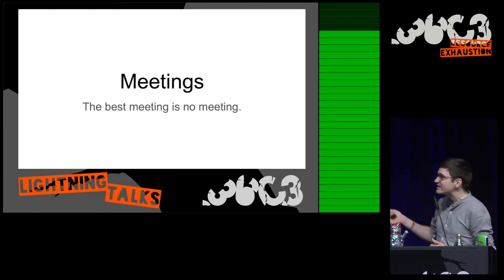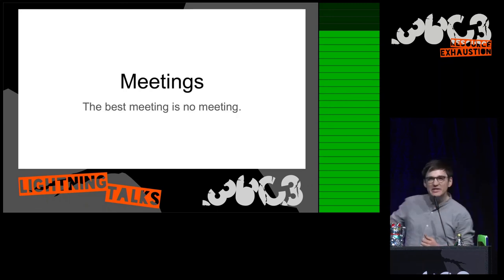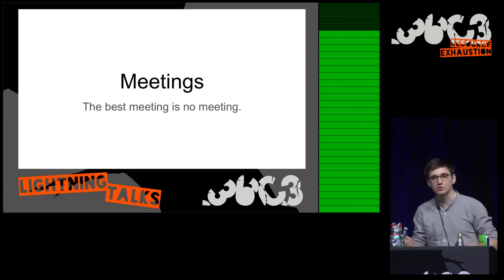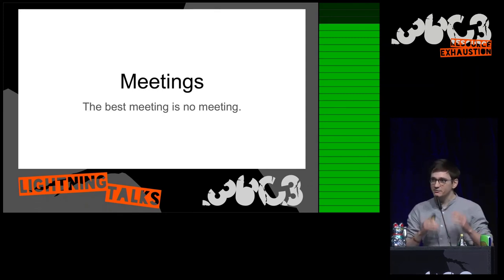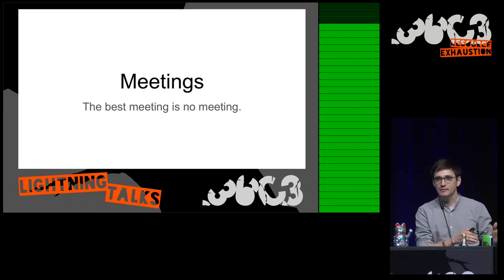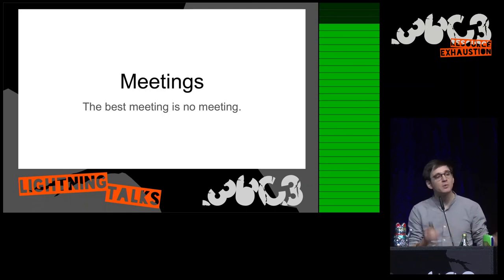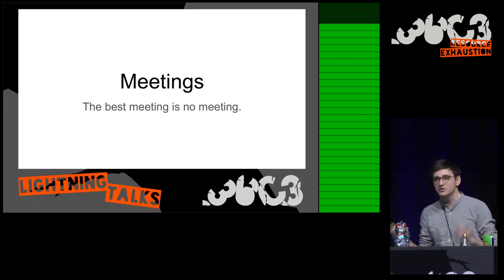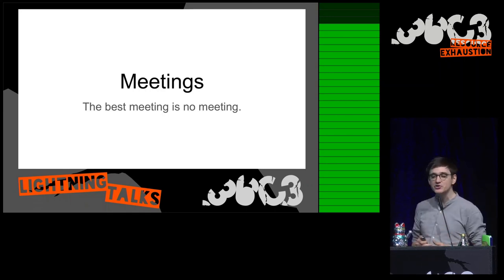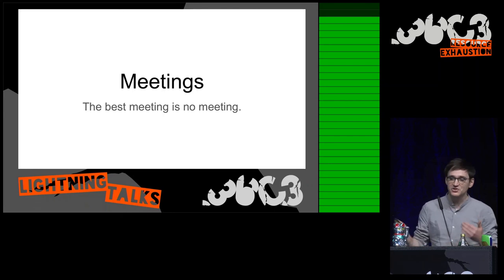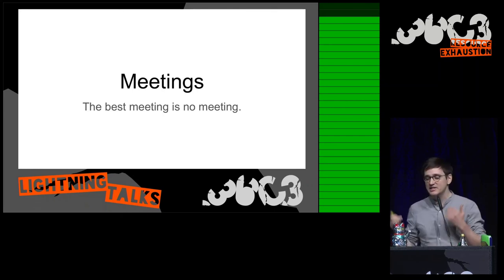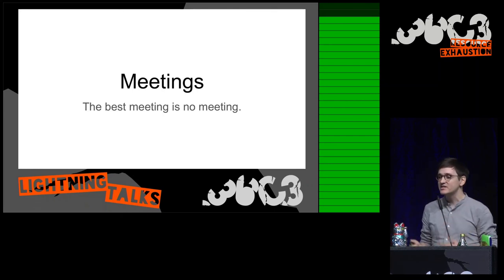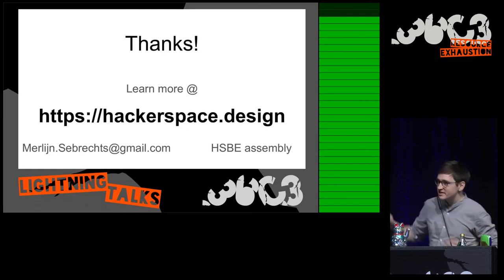The third thing is meetings. Meetings are also a big issue in a doocracy, because meetings give power to the people with opinions, and we do not want that. We want to give power to the people who actually do stuff. So the best meeting is no meeting — do as few meetings as possible. Thanks.